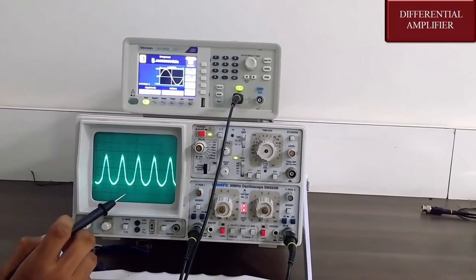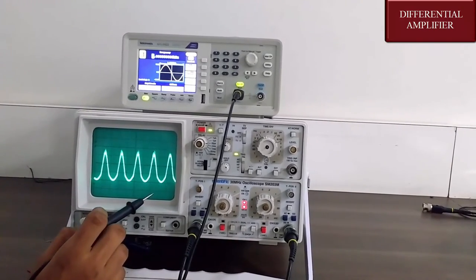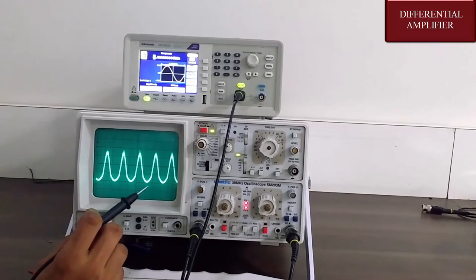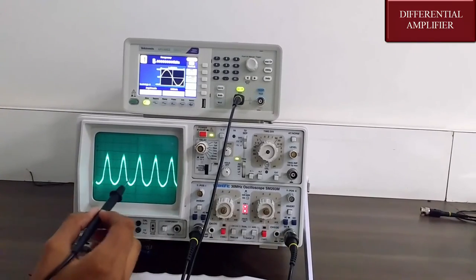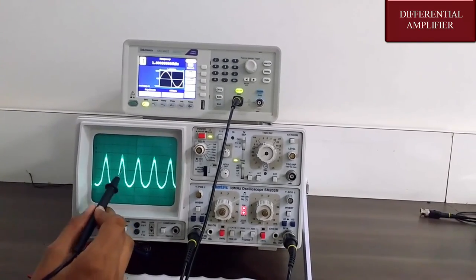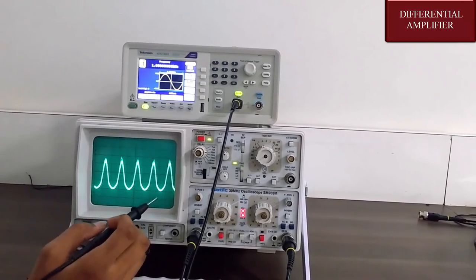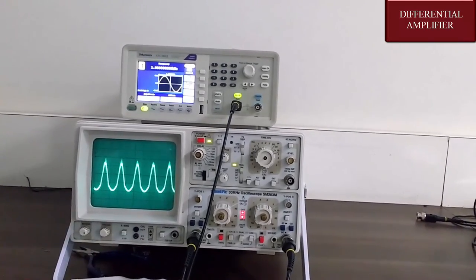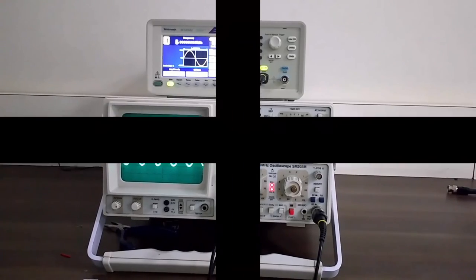Here we can see the final output of the differential amplifier. The total voltage of the signal, counting the divisions, is 1.1 plus 1.2.3, which equals 3.4 volts. This is all about the differential amplifier. Thank you.